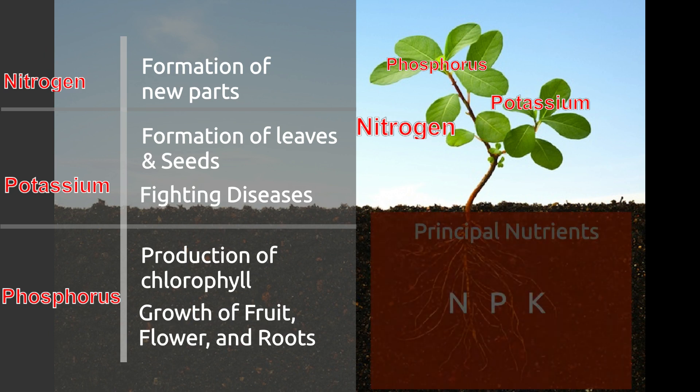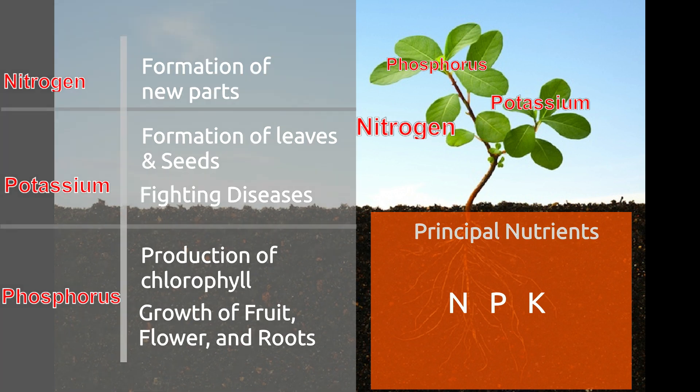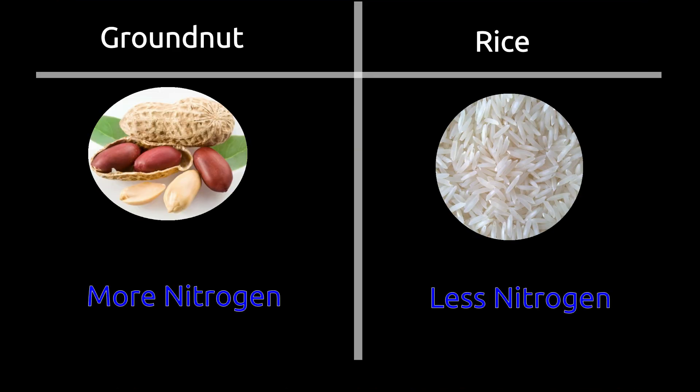Nitrogen, phosphorus, and potassium are known as principal nutrients. Soil rich in nutrients is known as fertile soil. The requirement of nutrients varies from plant to plant. For example, groundnut has more protein compared to the same amount of rice, and a crop of groundnut requires more nitrogen compared to a crop of rice.